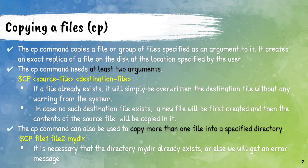Our first command is copy a file. The cp command is used to copy a file or directory — that is a group of files — specified as an argument to it. The cp command needs at least two arguments. The first argument refers to a source file while the second argument refers to a destination file.